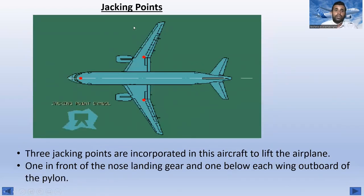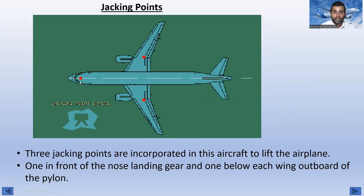Now the jacking points: the red marks on the diagram show the jacking points on the aircraft. Three jacking points are incorporated to lift the aircraft — one below each wing, outboard of the pylon, and the nose landing gear area. The jacking point symbol is also shown on the diagram.